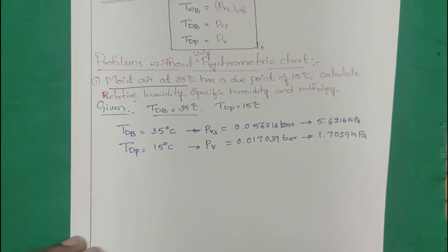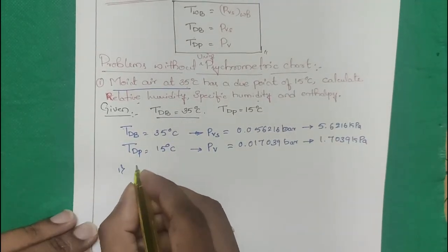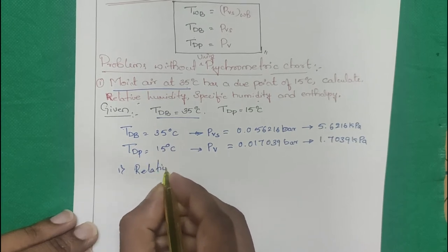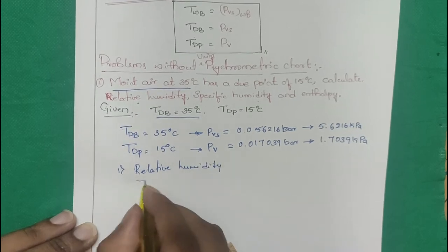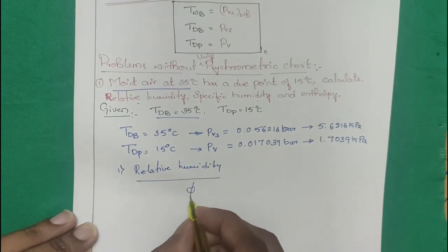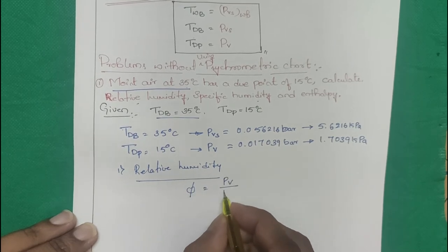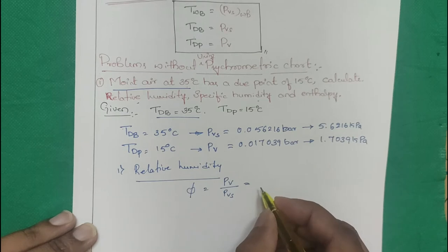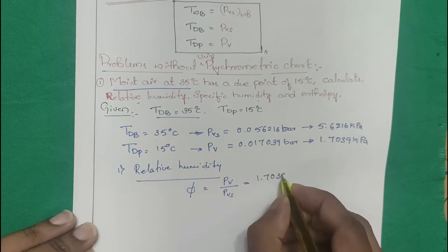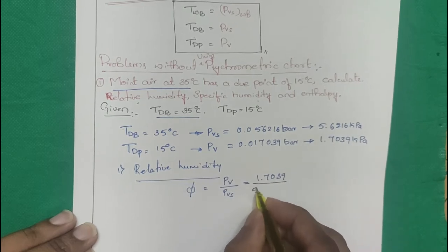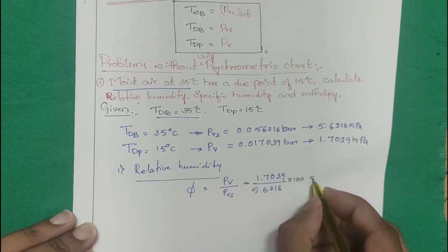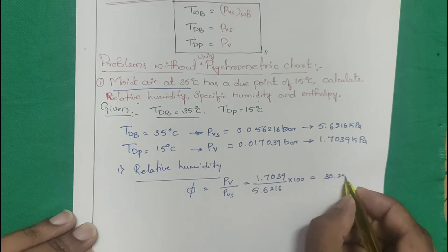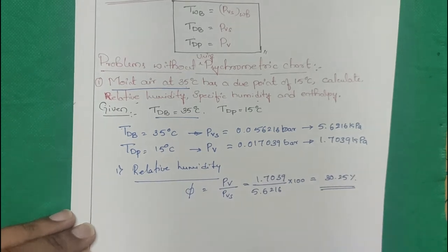Step 1 — Relative humidity: φ = PV / PVS × 100 = 1.7039 / 5.6216 × 100 = 30.25%.